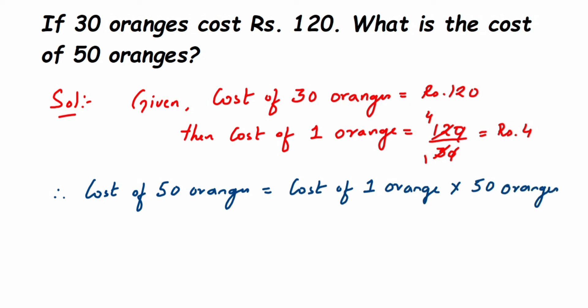Cost of one orange is Rs. 4, so Rs. 4 multiplied by 50 oranges. 4 times 50 is 200, so this equals Rs. 200. The cost of 50 oranges is Rs. 200. This is the unitary method.